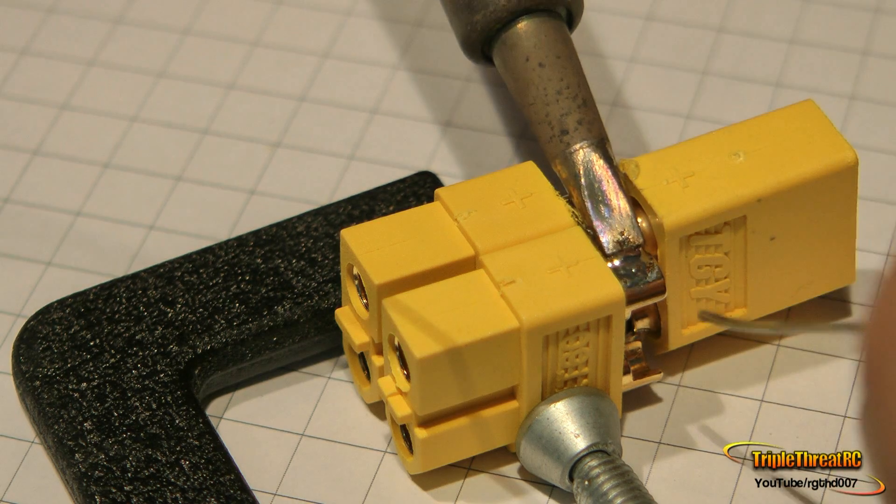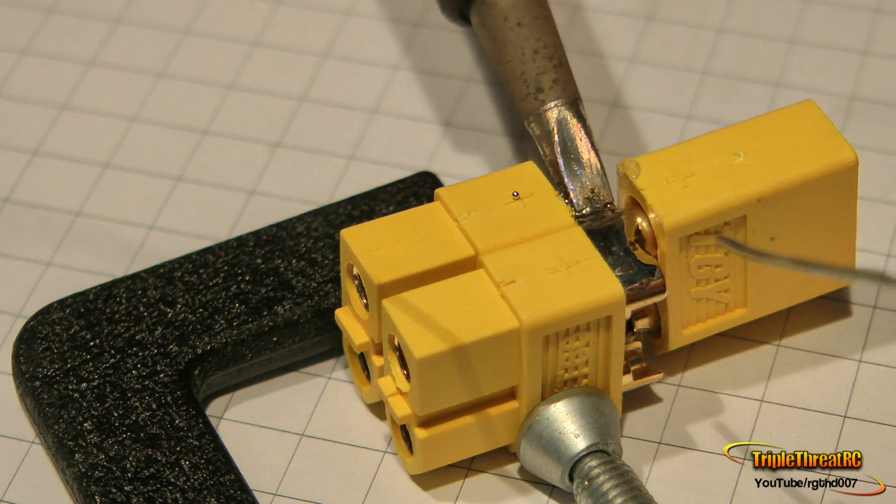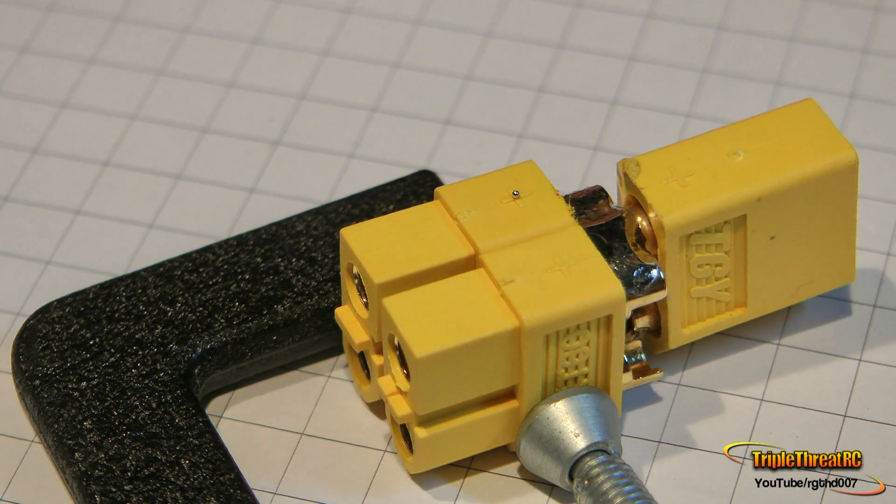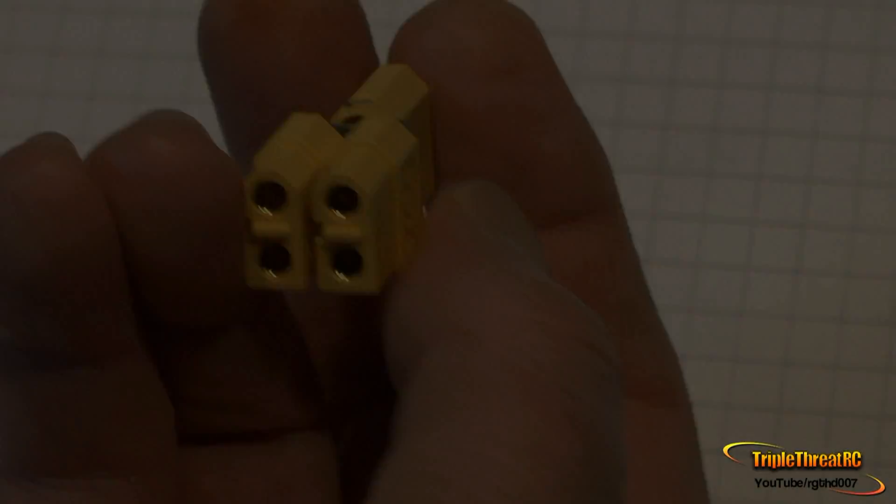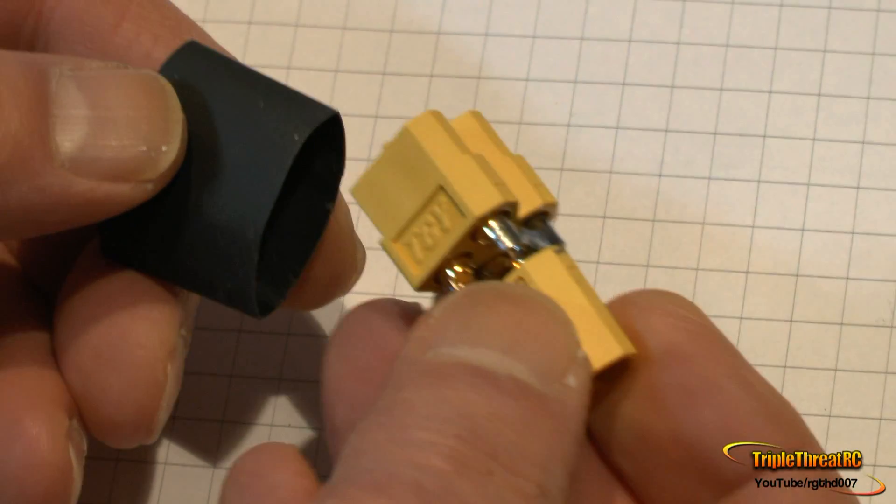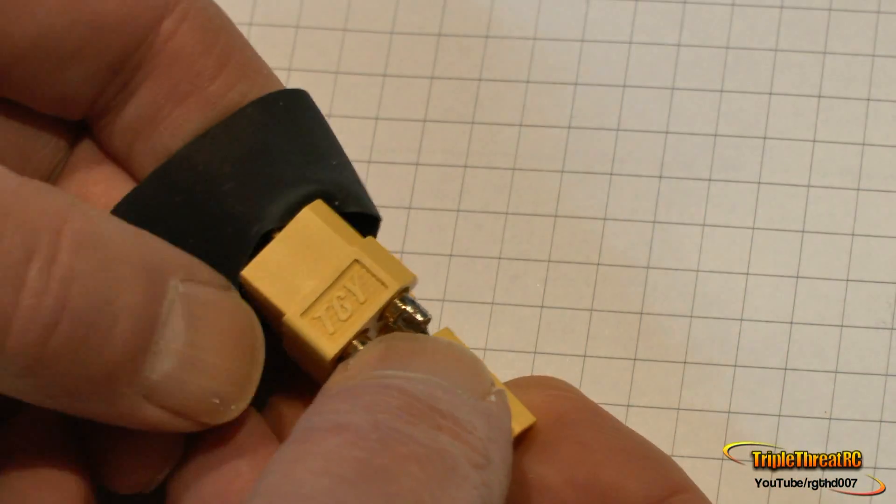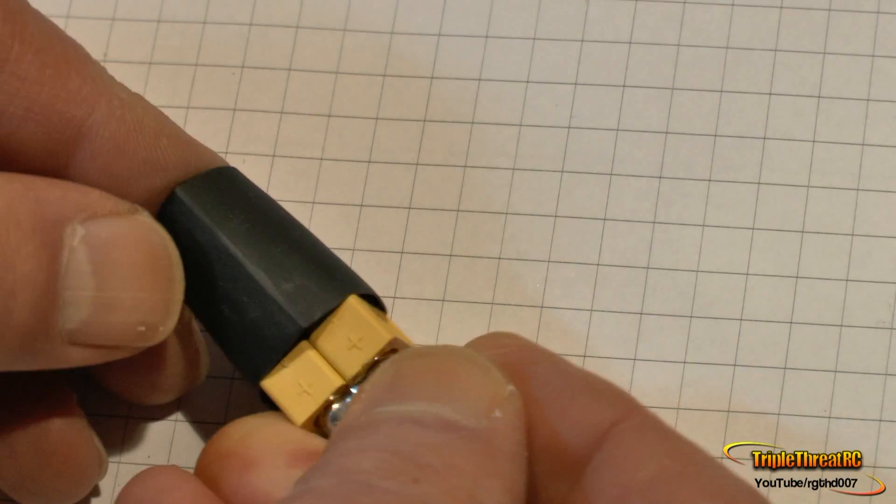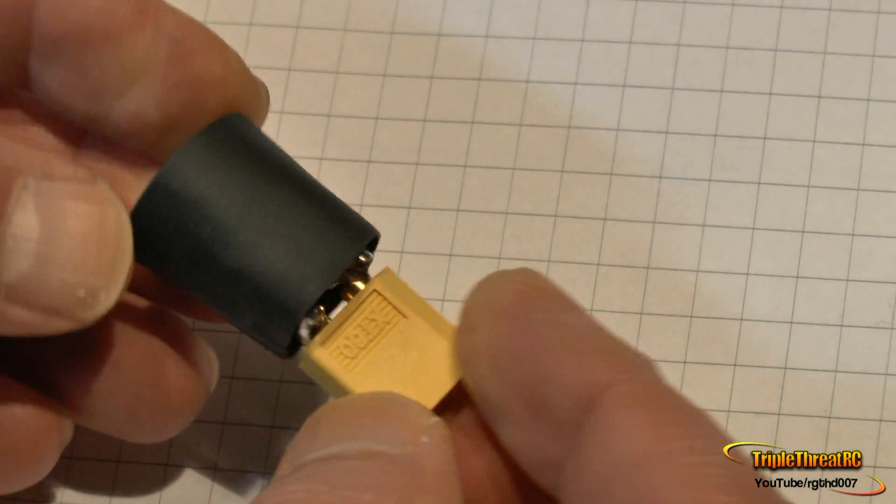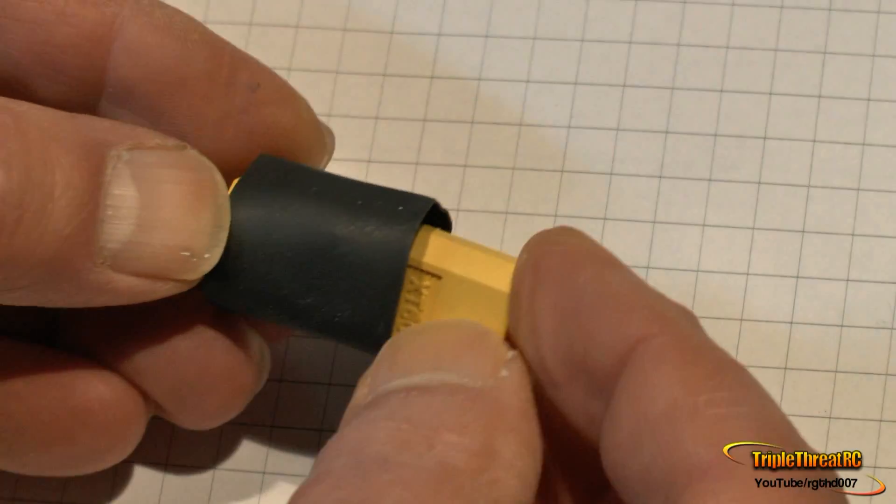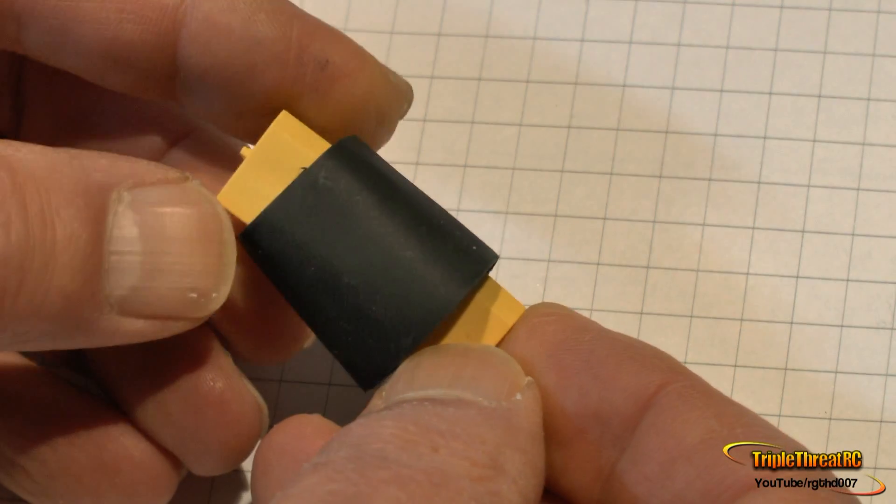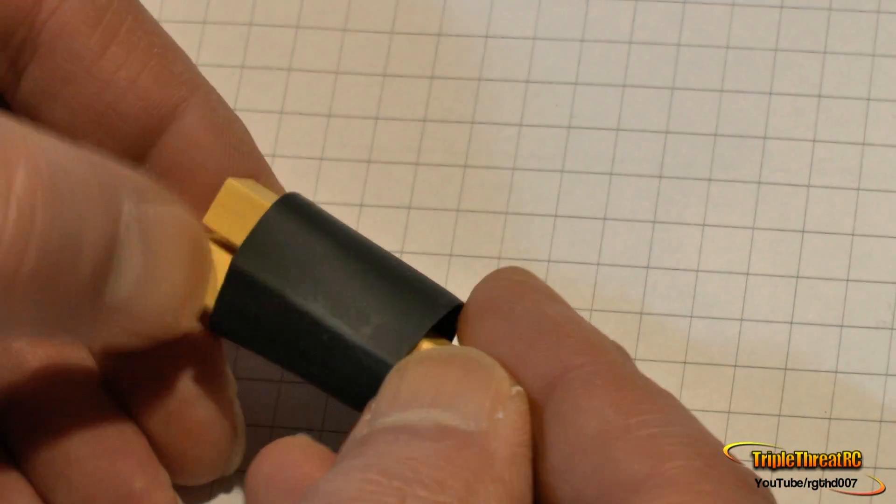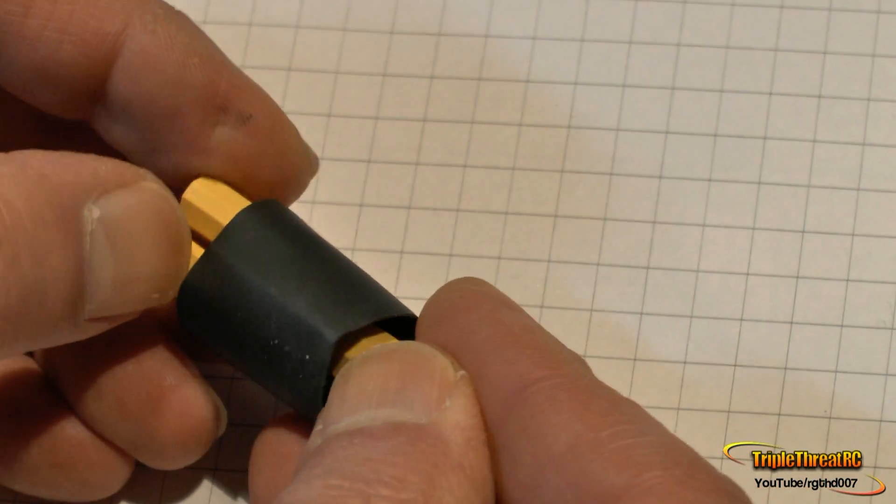So why would you want to do one of these yourself rather than just buy one? Well, in the case of the dual outlet connector, Hobby King doesn't offer one yet. In the case of the parallel connector, it could be that they're back-ordered or you don't want to just put in an order for one of these. It's just as fast if you have the connectors to make one up yourself. Now all that's left to do is put on a little bit of shrink wrap, and it's all finished and ready to use.